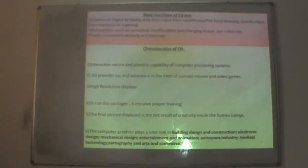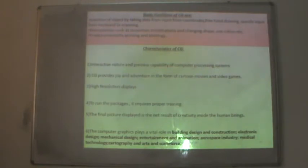The basic functions of computer graphics are: creation of objects by taking data input from coordinates such as freehand drawing, keyboard input and scan; secondly, manipulation — correction, modifications, and changing shape, size, color, etc.; and thirdly, production — mainly printing and plotting.